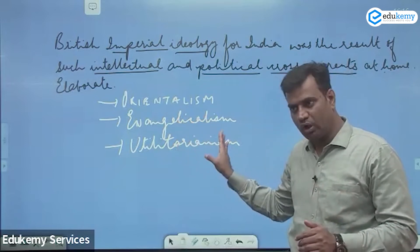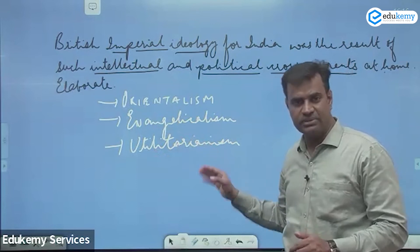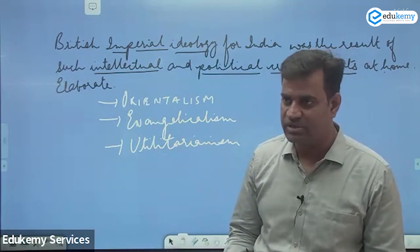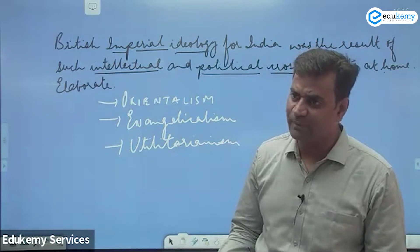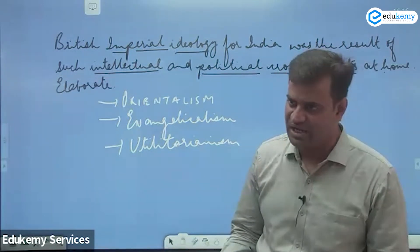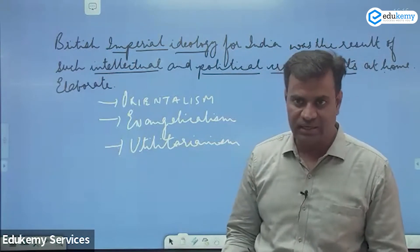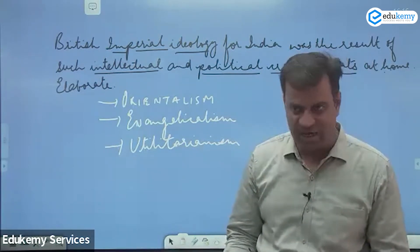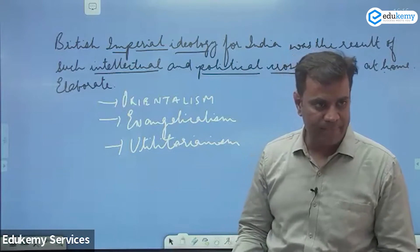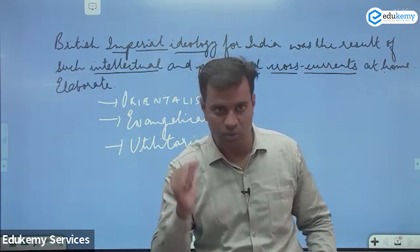For Evangelicalism, cite the role of Christian missionaries. For Utilitarianism, the biggest example is the growth and development of railways. You can also give examples of the establishment of three central universities — Calcutta, Bombay, and Madras, 1857 — and the establishment of three high courts at Calcutta, Bombay, and Madras in 1862.